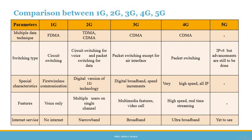Features by generation: 1G had voice only, 2G had multiple users on a single channel, 3G had multimedia features and video calls, and 4G had high speed real-time streaming. For internet services: 1G had no internet services, 2G had narrowband internet service, 3G had broadband, 4G had ultra-broadband, and 5G is yet to be seen. This covers how different generations of wireless communication have evolved, their different features and characteristics, and how they are helping humans by speeding up the way we use data and voice. If you have any queries on this topic, you can contact me — until then, keep learning.